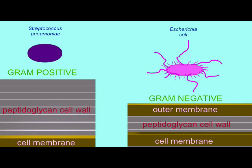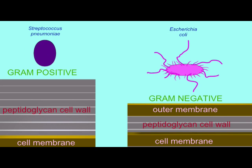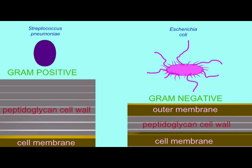Gram-positive bacteria have a thick layer of peptidoglycan in their cell wall outside their cell membrane. This takes up the purple stain in the Gram stain.